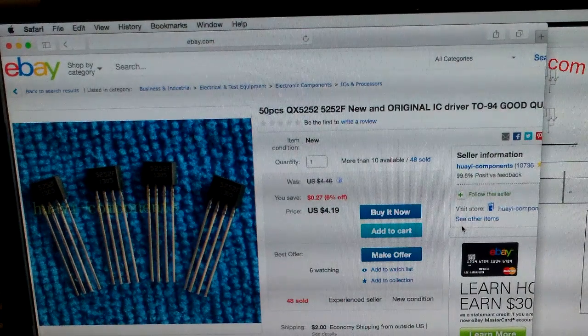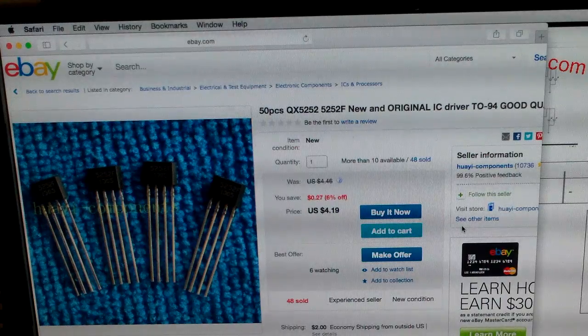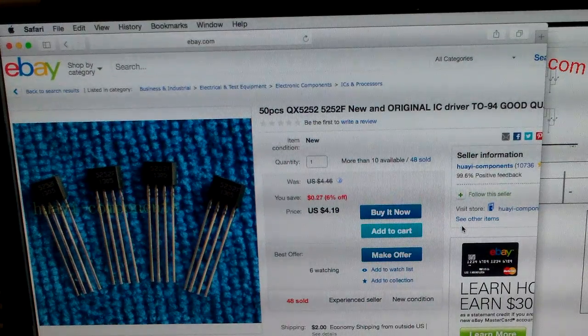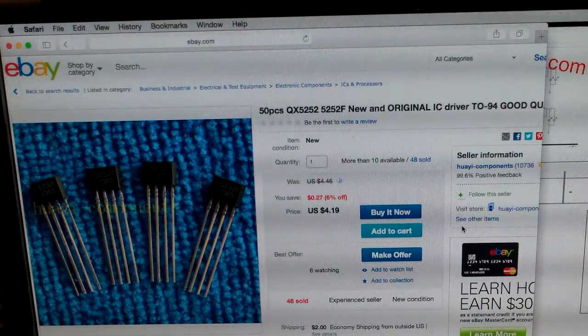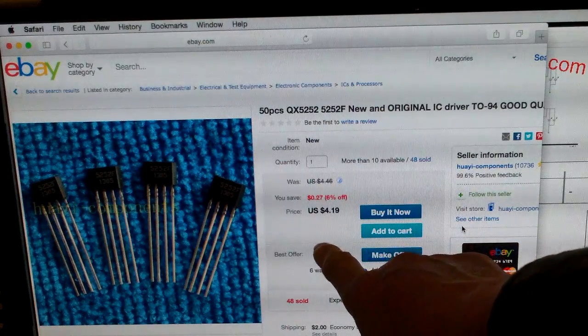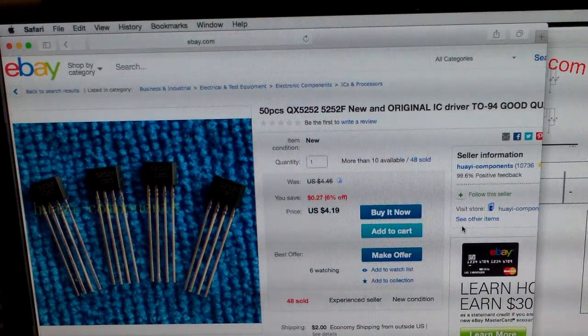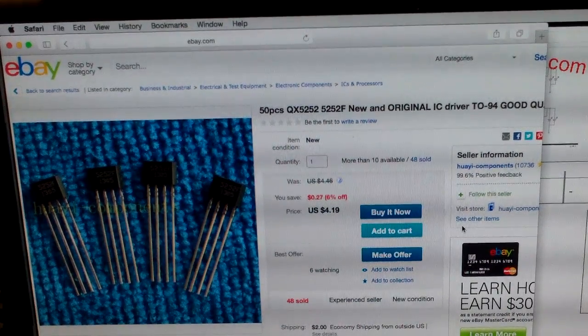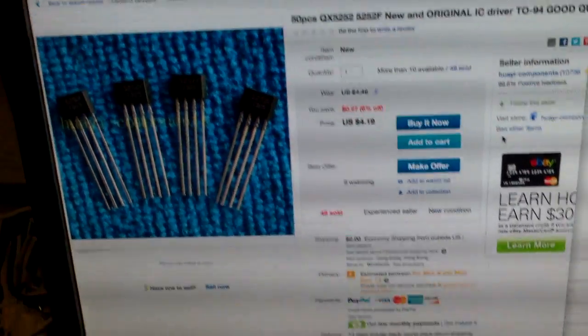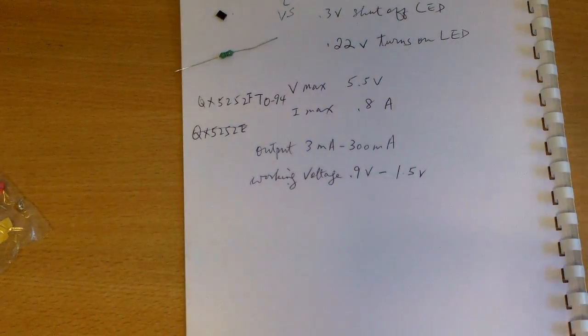For those interested in making the QX5252F based solar light, you can get the chip very inexpensively. You can get 50 of them for $4.19 with $2 shipping, or you can get 10 of them for a couple of dollars with $2 shipping. Now I'm just going to draw a very simple diagram as to how the chip works.